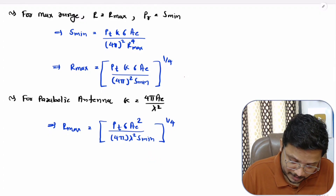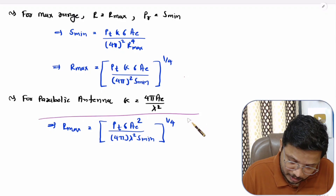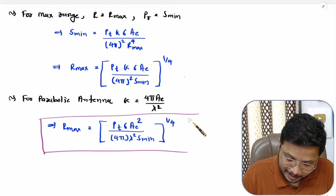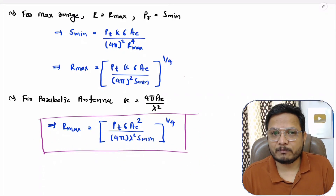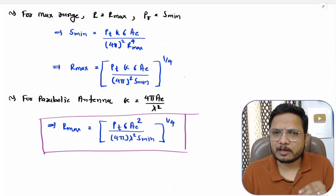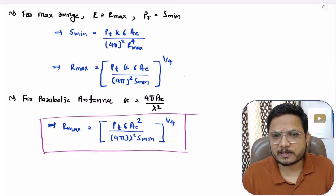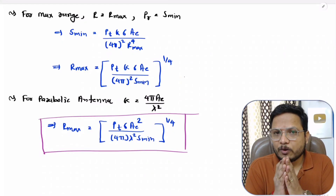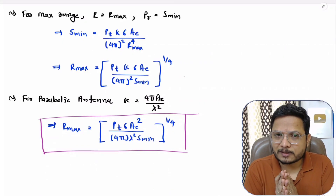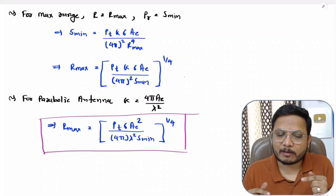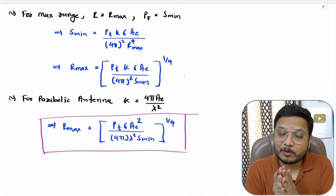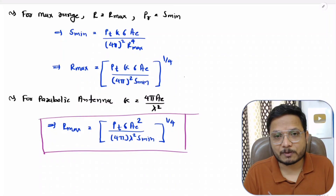This radar range equation explains the maximum range of a radar, where Smin is the minimum acceptable signal. This equation is very essential — based on it, one can identify the maximum range of a radar system, and I will be solving some examples using it in future videos. If you have anything to share, please note it down in the comment section. Thank you so much for watching.